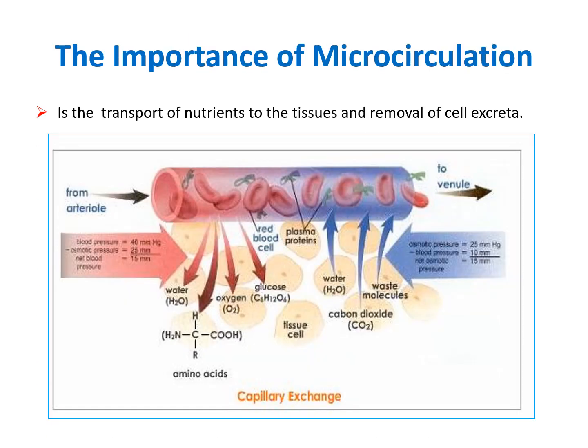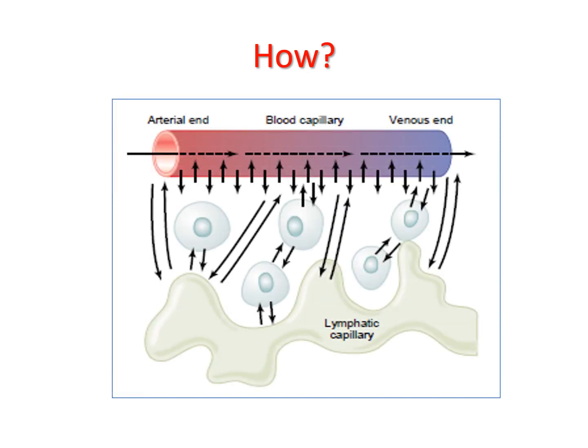The importance of microcirculation is that it is the site of transport of nutrients to the tissue and removal of metabolic waste products. This is accomplished by diffusion, transcapillary filtration (bulk flow) regulated by the Starling forces, diapedesis, and vesicular transport. So we have four ways of exchange of material between the blood and the interstitial fluid: diffusion, transcapillary filtration, diapedesis, and vesicular transport.